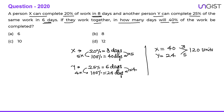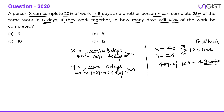40% of total work (120 units) = 48 units. When X and Y work together, they do 3 + 5 = 8 units per day. So 48 ÷ 8 = 6 days. For 40% of the work, X and Y together will take 6 days.